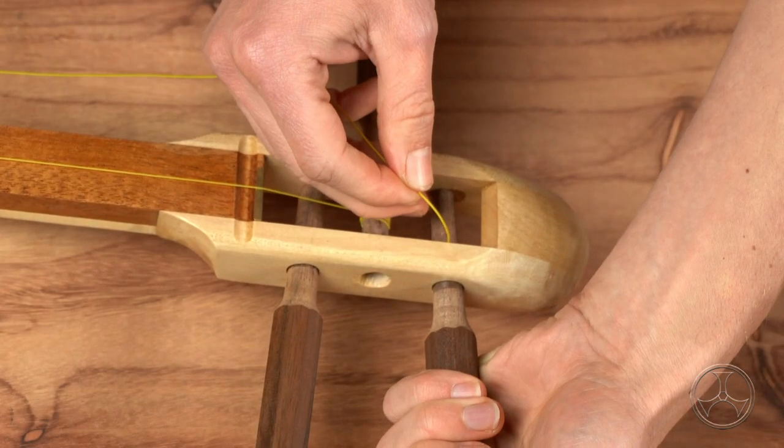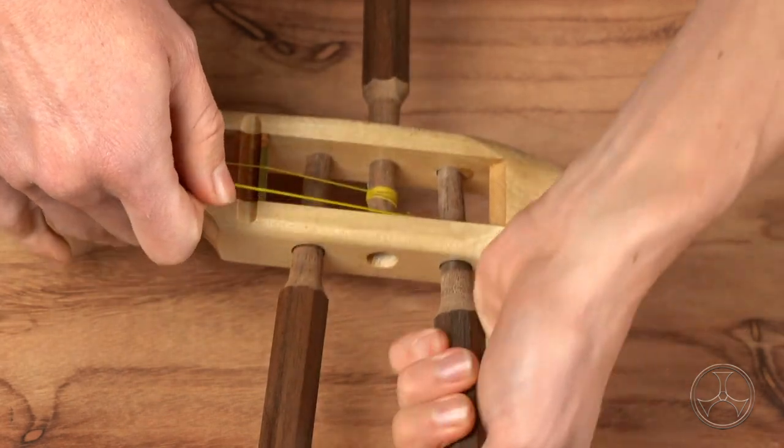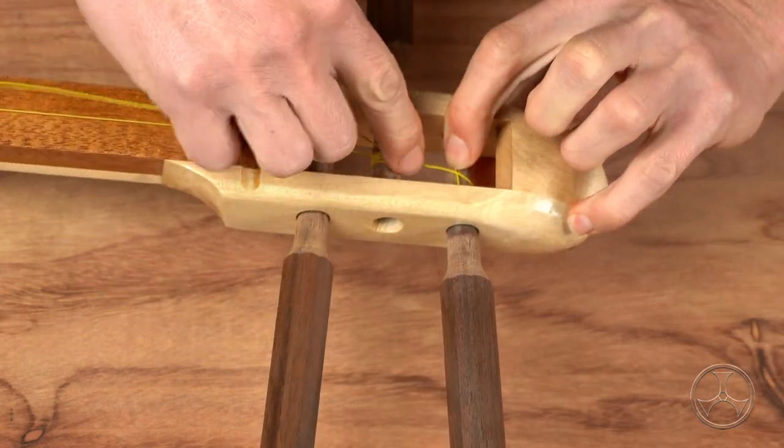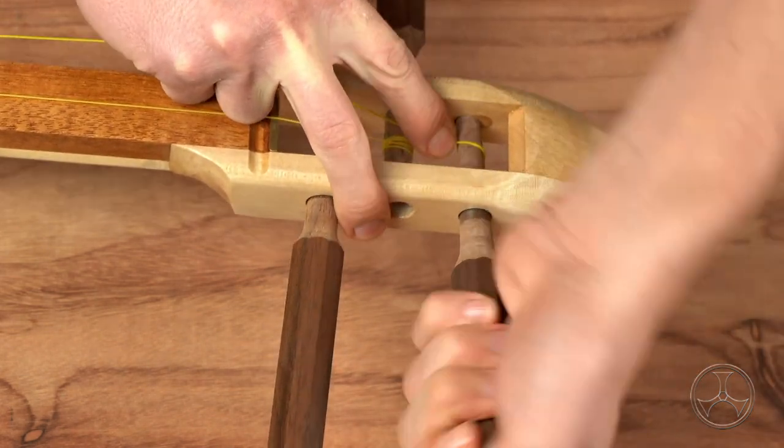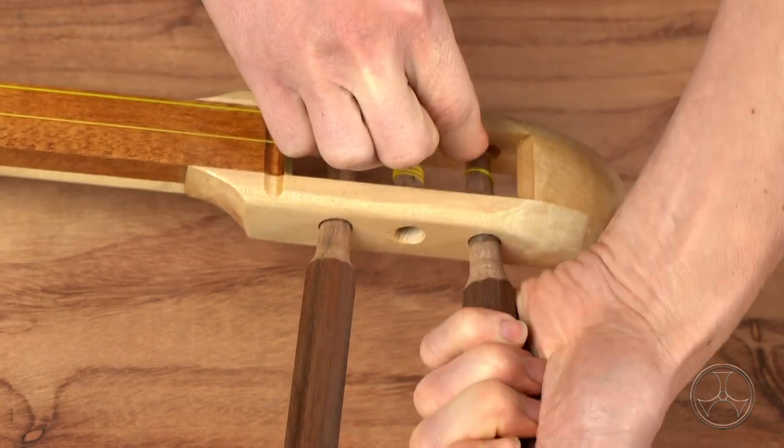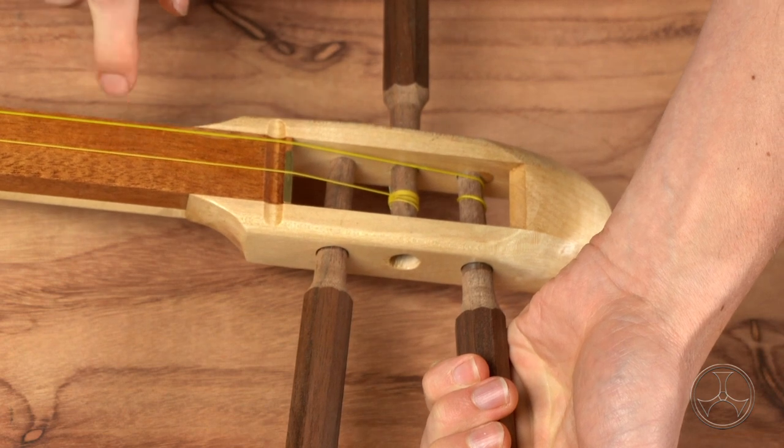Find the hole in the itomaki. Then turn. Put the string down and it will trap itself like so. Then turn and guide the string to this side. Tight enough.